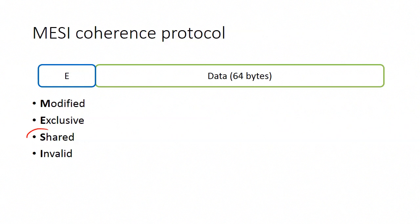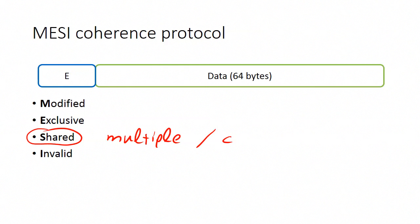Finally, the last state of the MESI protocol is the shared state, which indicates that there might be multiple copies of this cache line in the cache hierarchy, and the data is again clean, as with exclusive, meaning the same data are also contained in main memory.